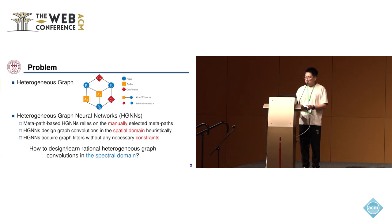This work focuses on heterogeneous graphs which have multiple types of nodes and edges. These graphs are widespread in our life. An example is an academic network that includes three types of nodes: paper, author, and conference.